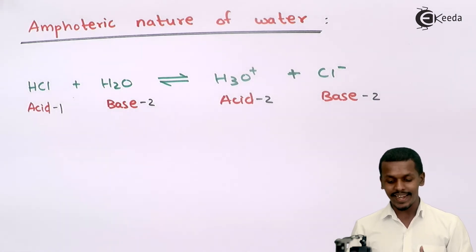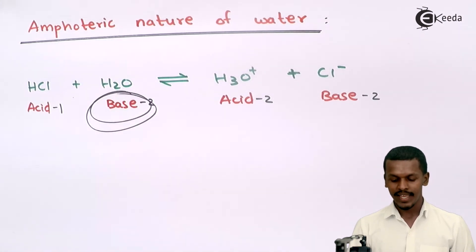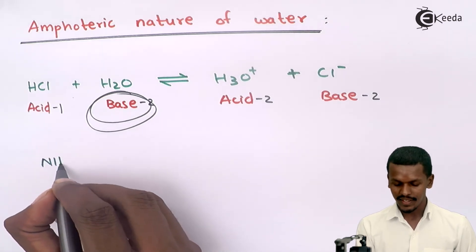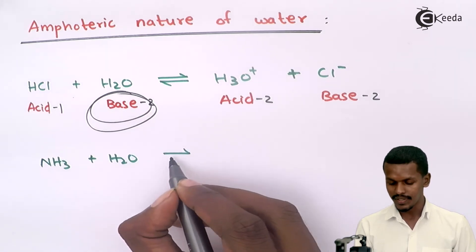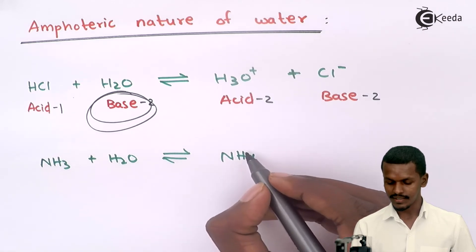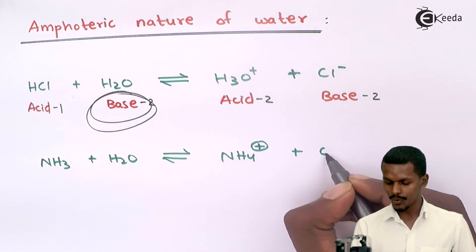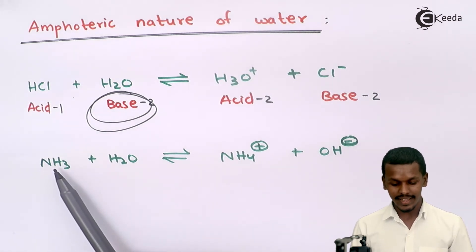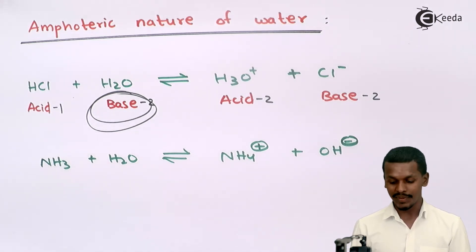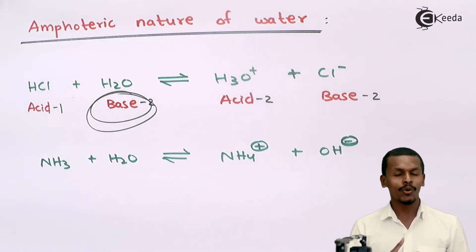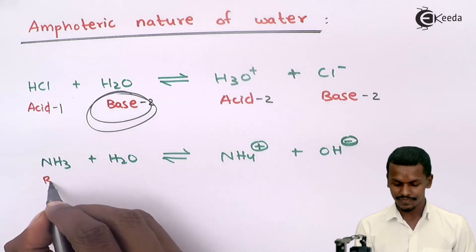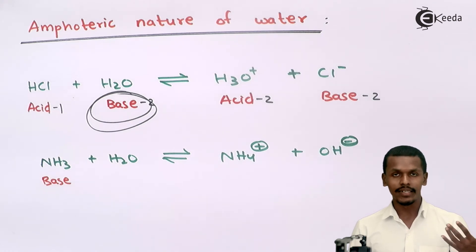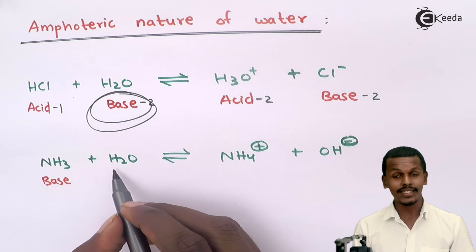Now, H₂O is acting like a base in the previous case, but let us look at another reaction. Suppose NH₃ is reacting with H₂O to form NH₄⁺ plus OH⁻. In this case, NH₃ is the one accepting hydrogen from H₂O to form NH₄⁺. Since it accepts hydrogen, according to Lowry-Bronsted theory, NH₃ is acting like a base. Meanwhile, H₂O is donating its H⁺ to NH₃ and forming OH⁻, so H₂O is acting like an acid here.